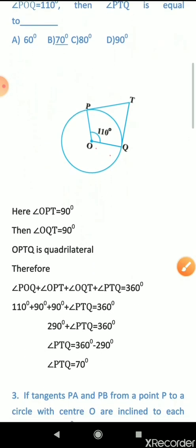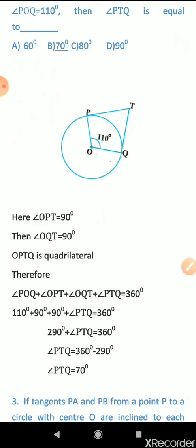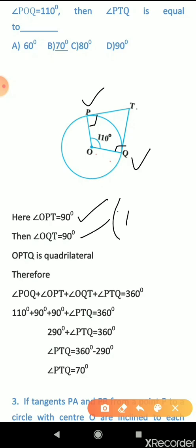Let us check. Theorem 1 says the radius is perpendicular to the tangent at the point of contact. So angle OPT = 90 degrees and angle OQT = 90 degrees — both are perpendicular by Theorem 1. OP is the radius and TP is the tangent, perpendicular at contact point P. Similarly, OQ is a radius and TQ is a tangent, perpendicular at contact point Q.